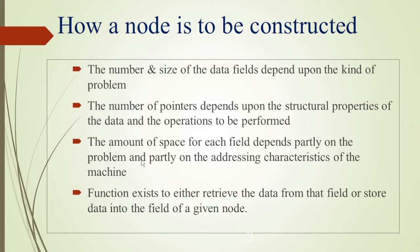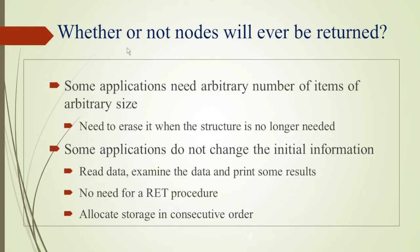The space also depends upon the addressing characteristics of the machine. On some machines integers will be represented by 4 bytes, sometimes you need 8 bytes. So depending upon the machine, the amount of space will vary. We also need functions to retrieve data from the field or store data into the field of a given node.